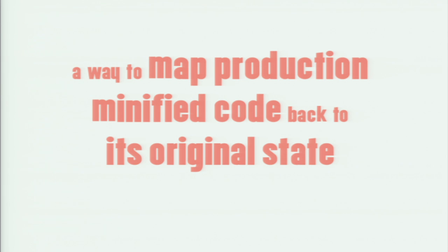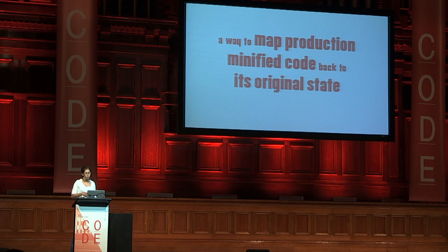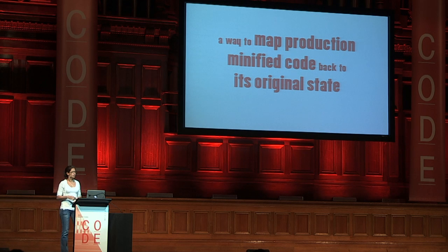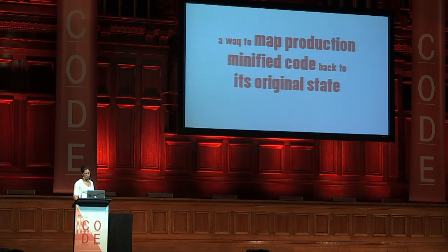Source maps is really a way to map your production minified code back into its original state. So when you work with that, you know exactly — it's like you're running your unminified and uncombined files in the browser.